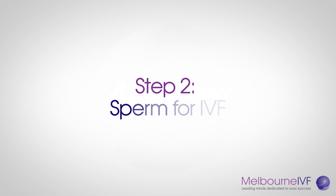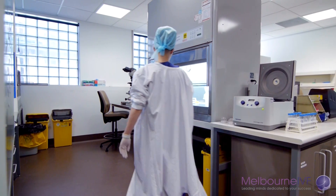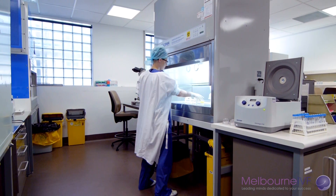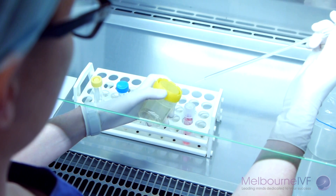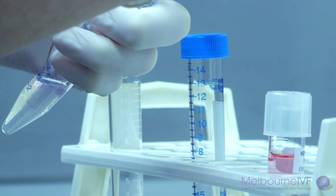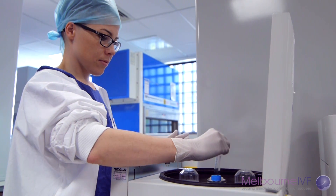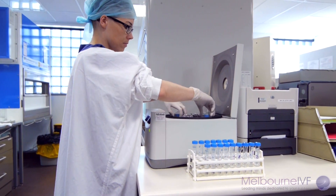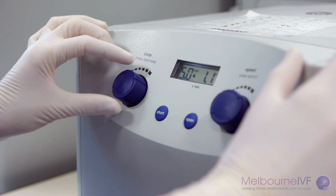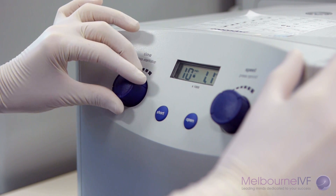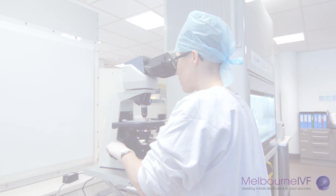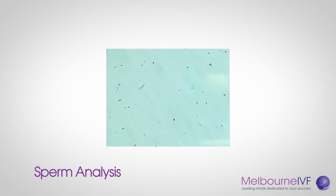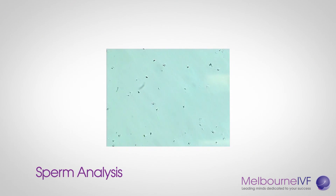Step 2: Sperm for IVF. On the day of egg collection, the male partner produces a fresh sperm sample at about the same time the female's eggs are collected. In preparation for IVF, the embryologist then separates the motile sperm from the seminal fluid. It undergoes a process called centrifugation, where it is concentrated by spinning it through a special solution. Should the sample not be sufficient for IVF and ICSI is required, the embryologist will discuss the findings with the fertility specialist.